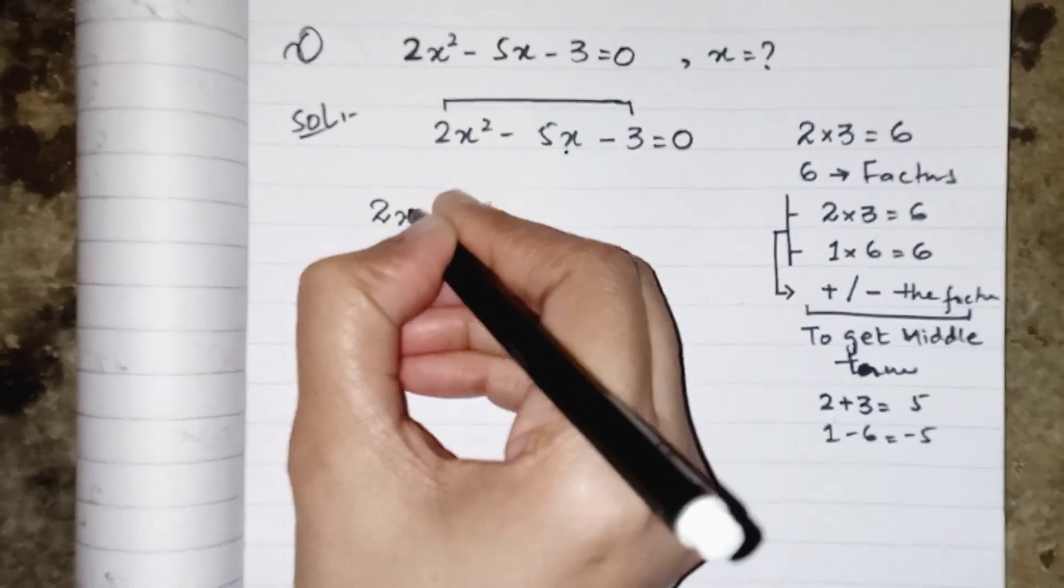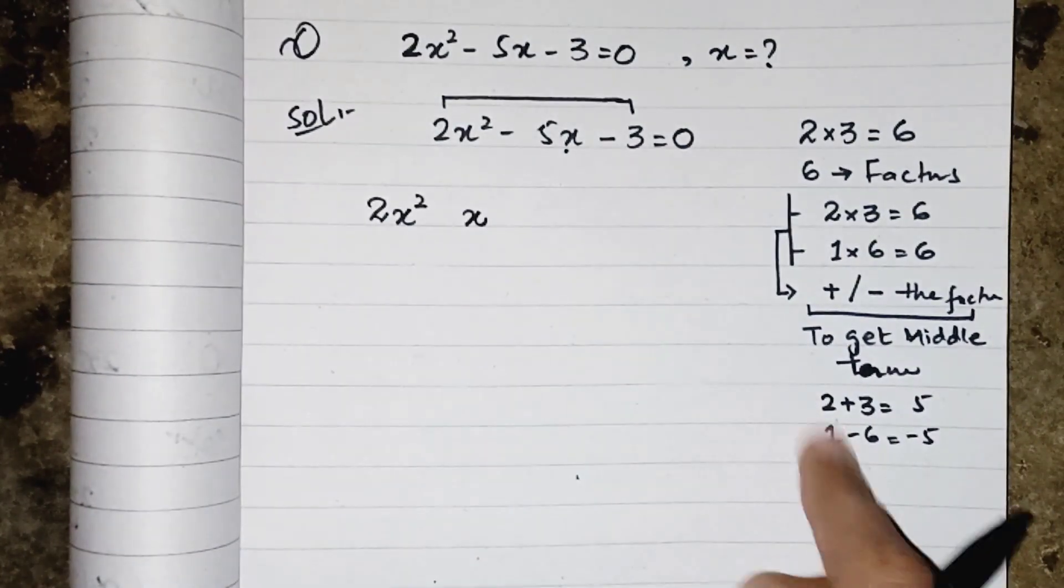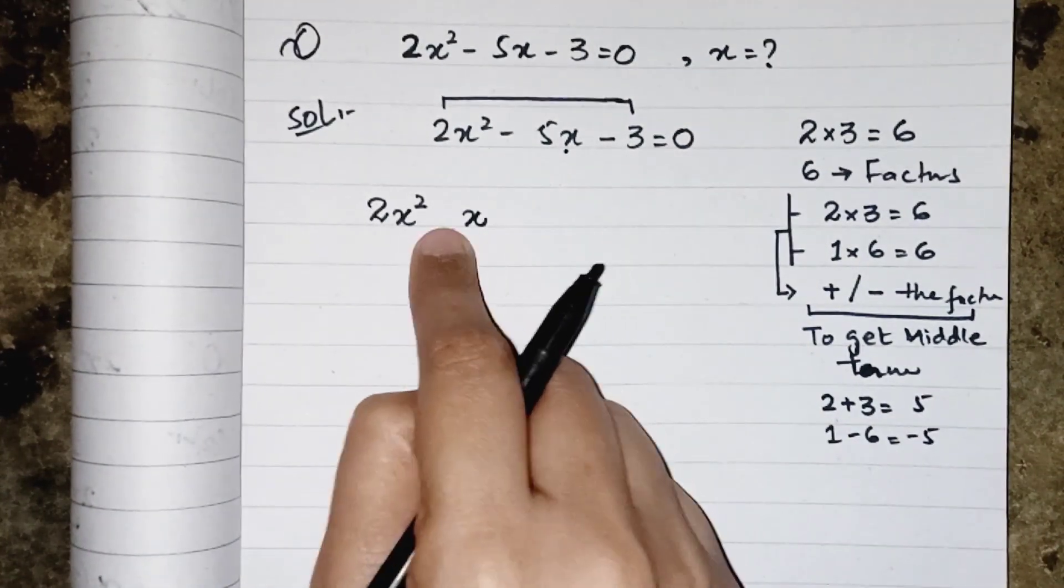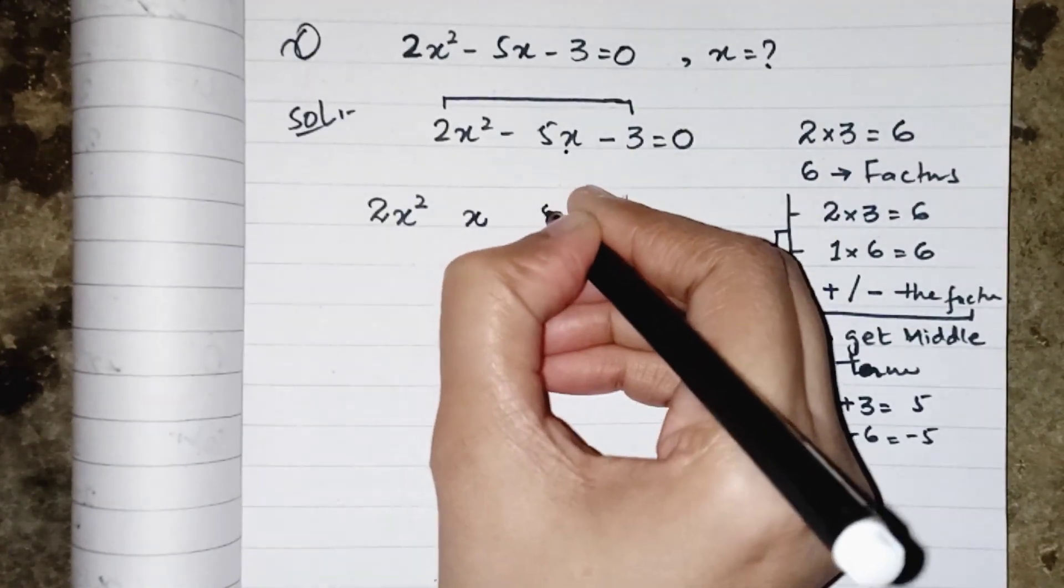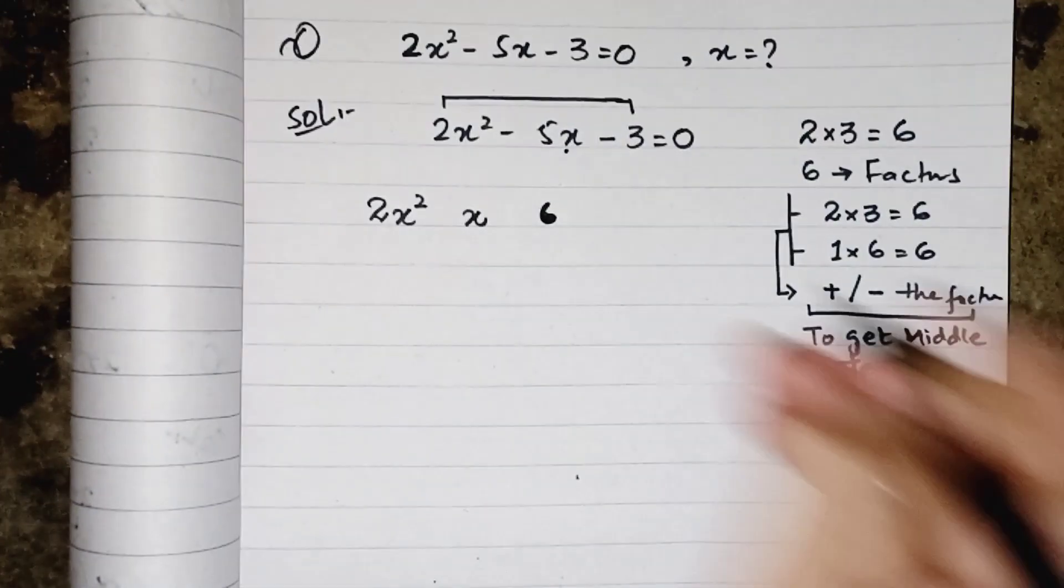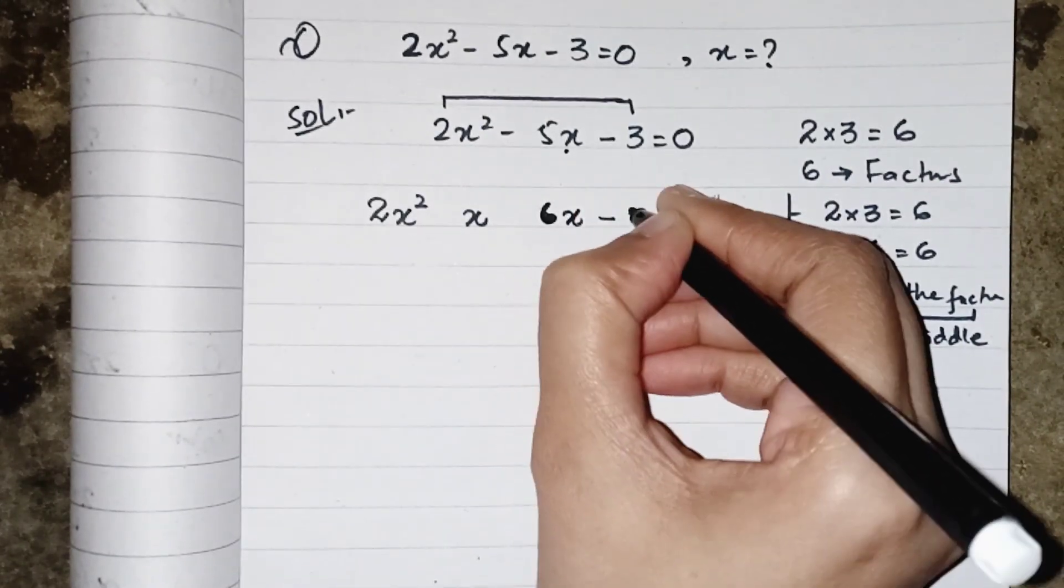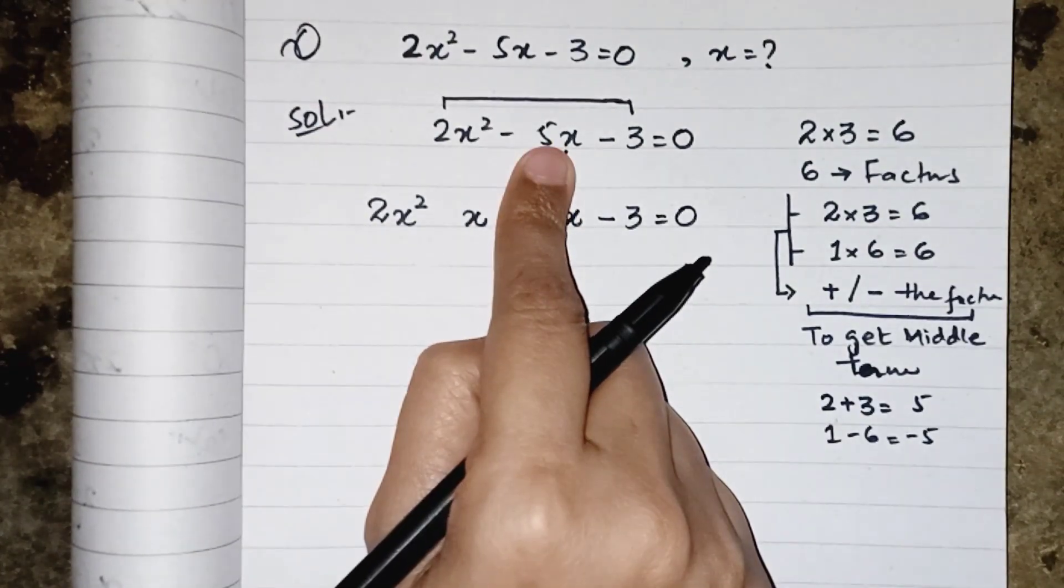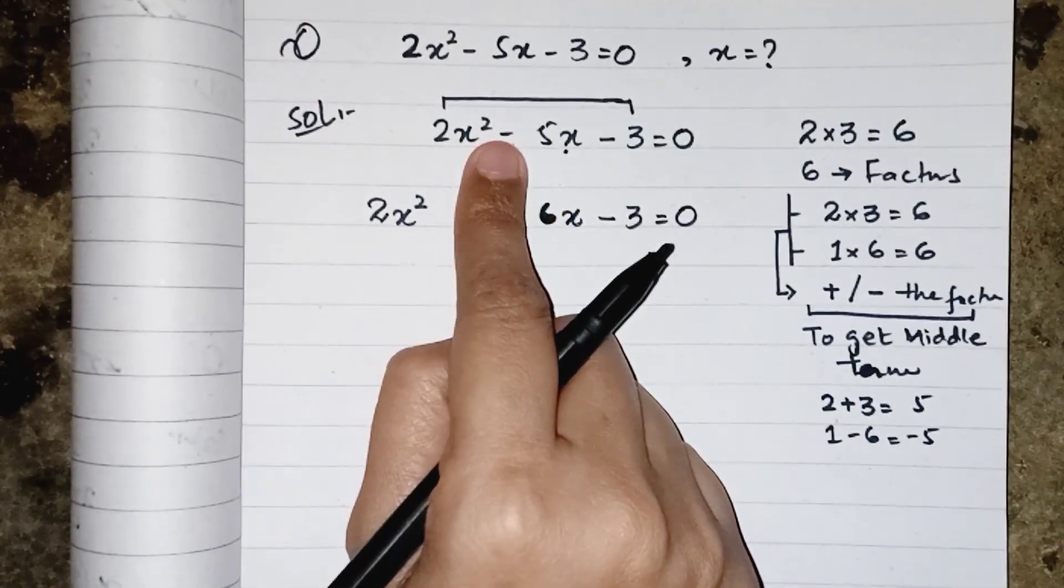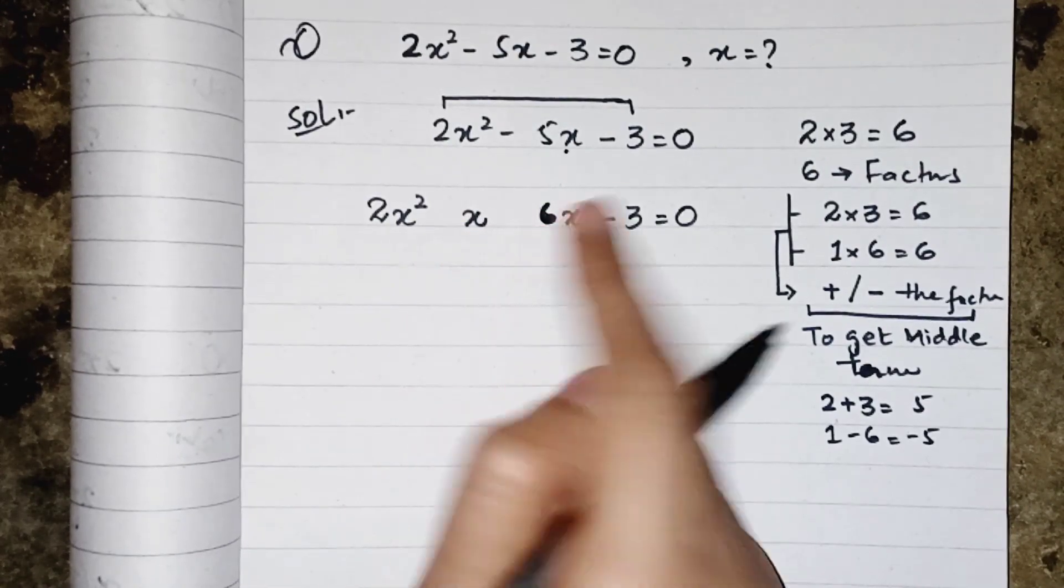As we have the factors 1 and 6, so in place of this 5 we have to write these 2 factors. So we will write 2x squared plus x, because we have 1, so along with the variable we cannot write coefficient as 1. The other factor is 6, so we will write 6x, then minus 3 equals to 0.